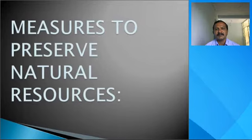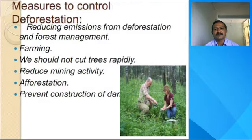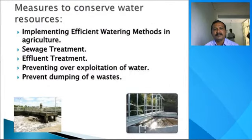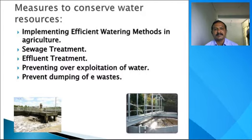Now we will see the measures for how we should preserve natural resources. We can control deforestation — we should reduce cutting of trees, as trees are being cut rapidly today. We should also reduce mining activity. To conserve water resources, we should use efficient water methods in agriculture, such as drip irrigation. Sewage water treatment means that waste water should be reused.